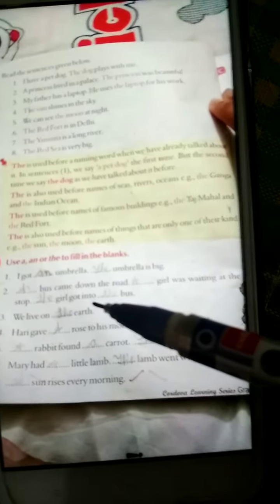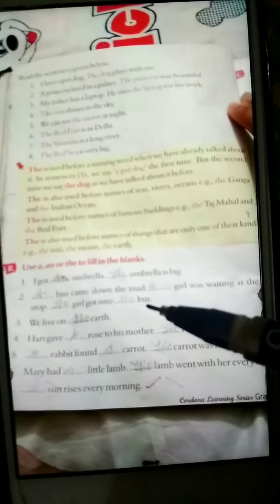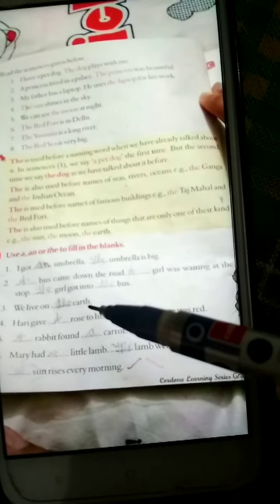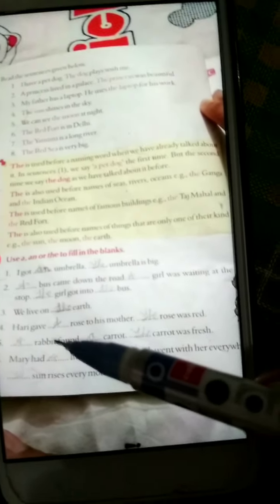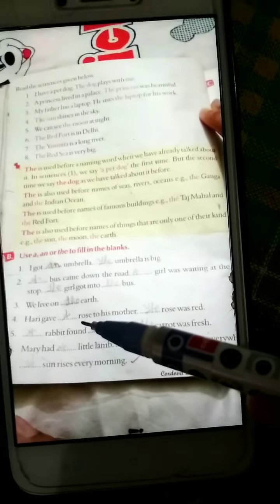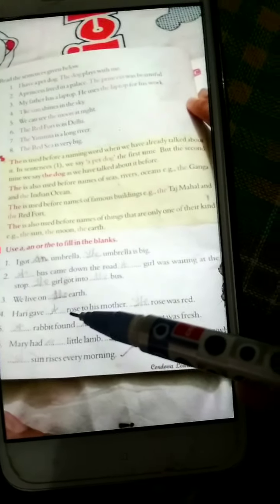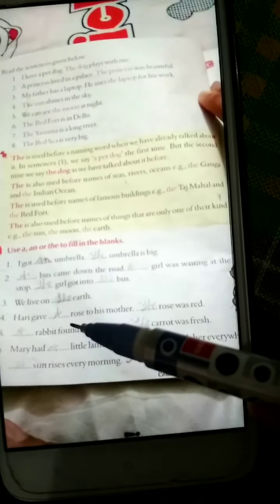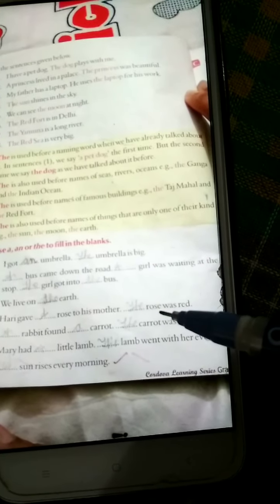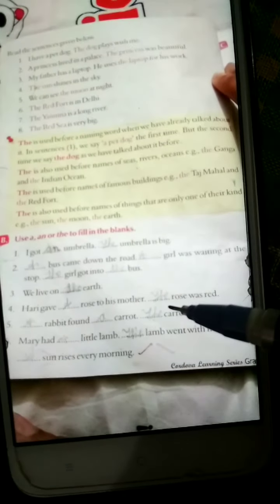We live on dash earth. With earth, what do we use? 'The'. Okay. Hari gave dash rose to his mother. Rose, 'r' sound, it's a consonant sound, so we will write here 'a'. Dash rose was red. We are again talking about rose, so we will write here 'the'.